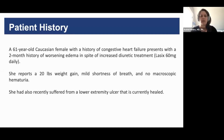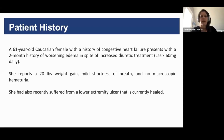This was a 61-year-old Caucasian female. She had a history of congestive heart failure and presented with a two-month history of worsening edema in spite of increased diuretic treatment. She was on Lasix, like all of those patients usually are. Often these histories are quite long, especially in adults where they develop this edema and it is blamed on the heart failure instead of looking at the urine to figure out if maybe this patient might have proteinuria. She also reported a 20-pound weight gain along with that edema, mild shortness of breath, and she didn't have any macroscopic hematuria.